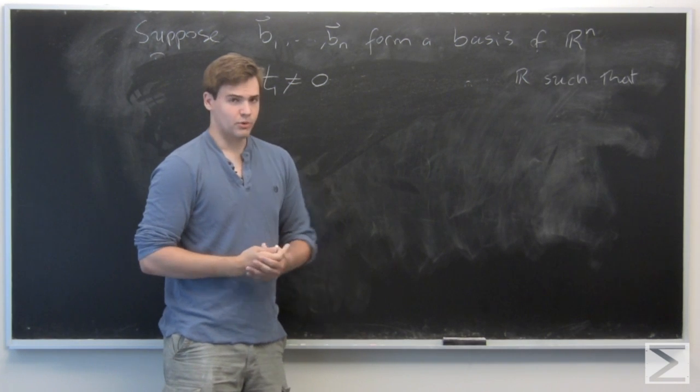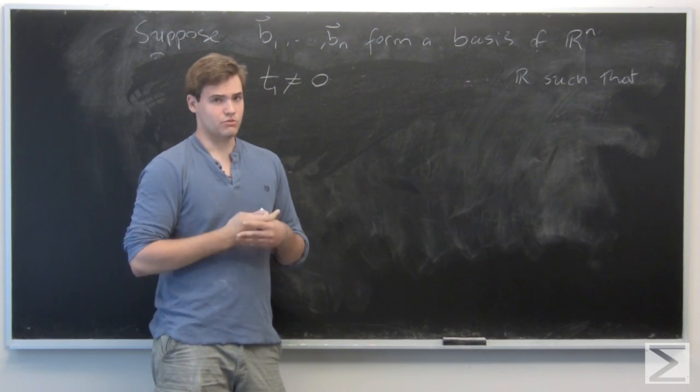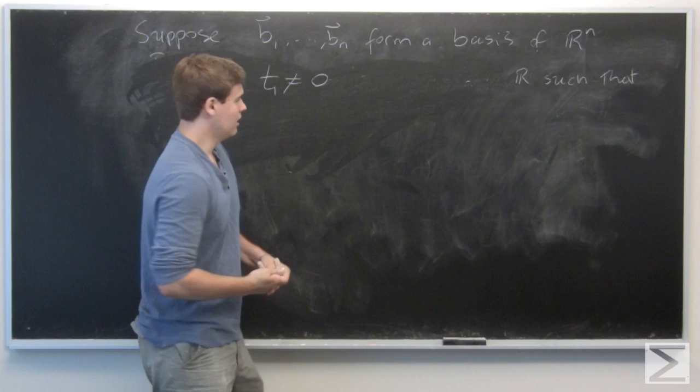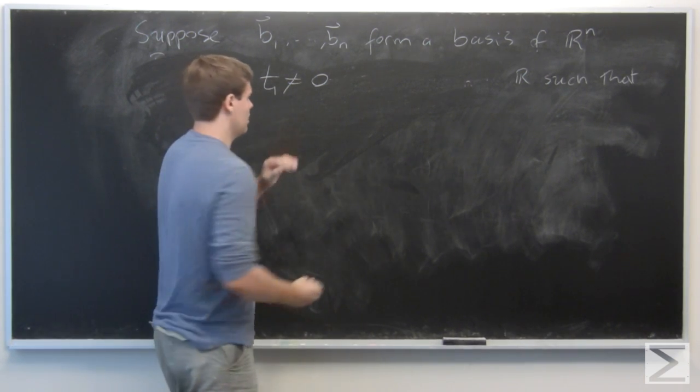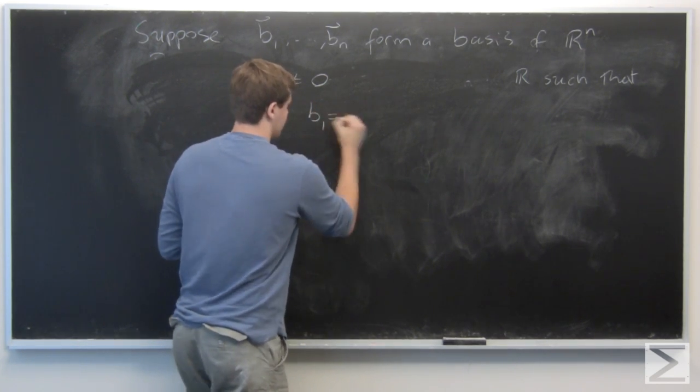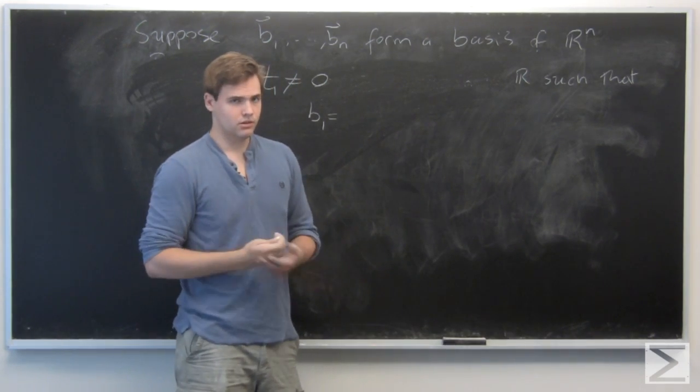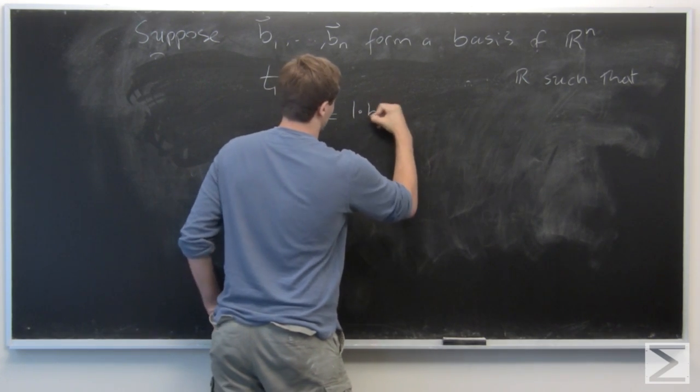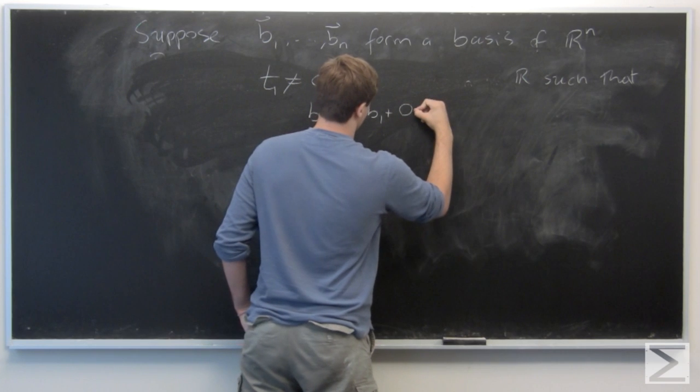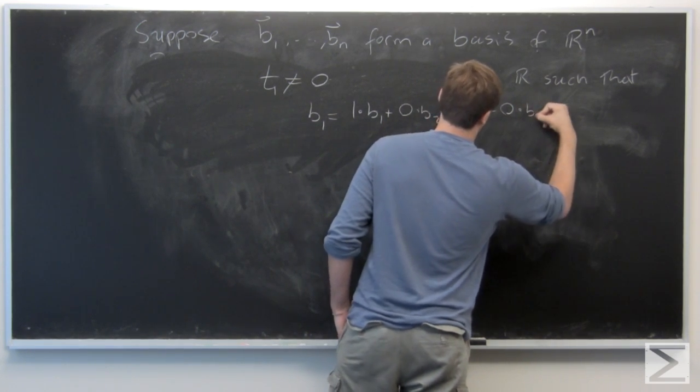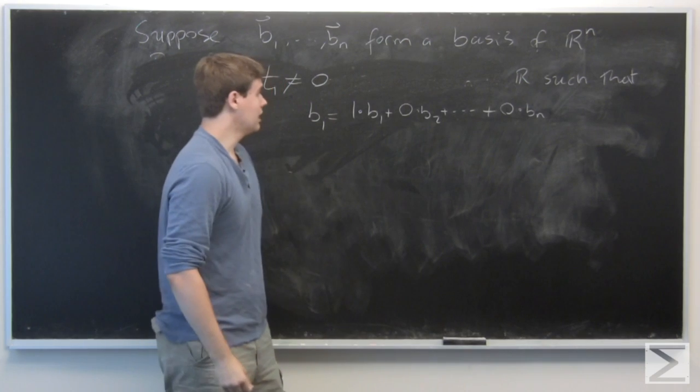So we're going to exploit the fact that a basis gives a unique expression in terms of a linear combination of the other basis elements. So since T₁ is not equal to 0, we can write, well, B₁ can be written. It's a vector in the vector space. So perfectly legitimate. It can be written as 1 times B₁ plus 0 times B₂ dot dot dot plus 0 times Bₙ.